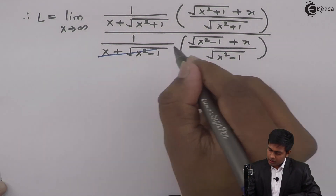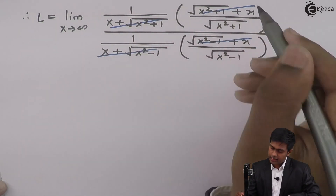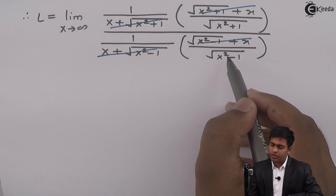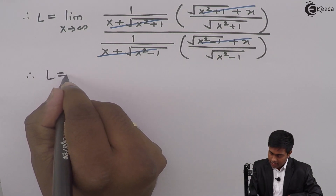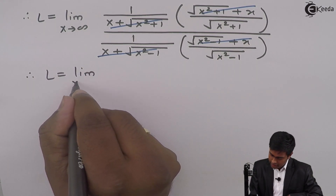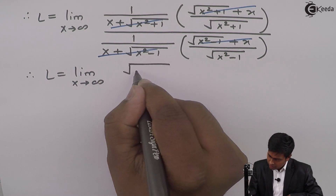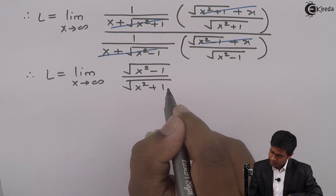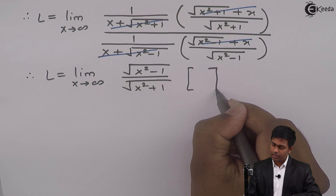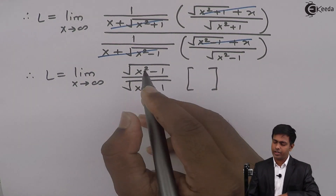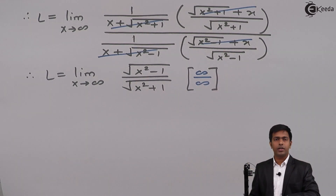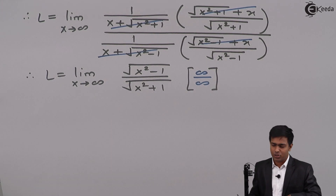These two terms are cancelled and similarly these two terms are cancelled. This term will go in the denominator and this term will come in the numerator. Therefore we get L as limit x tends to infinity of root of x squared minus 1 upon root of x squared plus 1. Now if we try to substitute x as infinity we get infinity minus 1 over infinity in the denominator — we are again getting an indeterminate form, so we have to apply L'Hôpital's rule again.